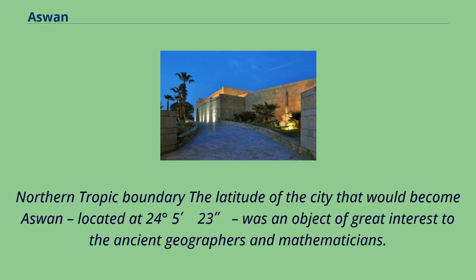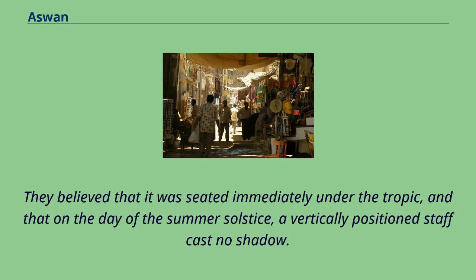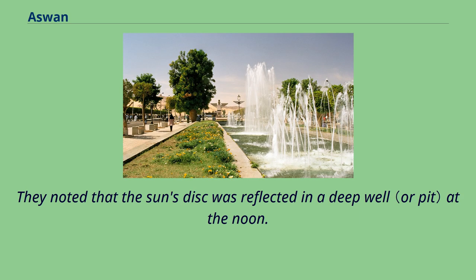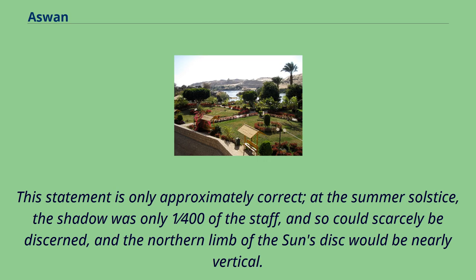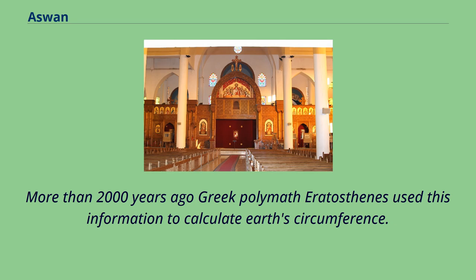The latitude of the city that would become Aswan, located at 24 degrees 52'3", was an object of great interest to ancient geographers and mathematicians. They believed it was seated immediately under the tropic, and that on the day of the summer solstice a vertically positioned staff cast no shadow, and that the sun's disk was reflected in a deep well at noon. This statement is only approximately correct — at the summer solstice the shadow was only one four-hundredth of the staff. More than 2,000 years ago, Greek polymath Eratosthenes used this information to calculate Earth's circumference.